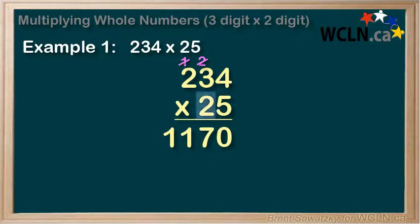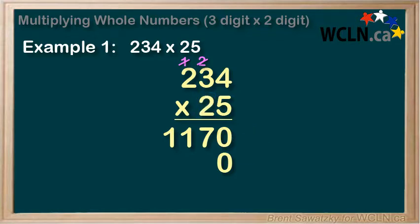Next, we deal with the 2. But we note that this isn't just a 2 — it's in the 10 spot, so really we're talking about a 20. The easiest way to deal with the fact that this is a 20 is to put a 0 down here, and then we just treat it as a 2, as the 0 multiplies an extra 10 for us. So we're ready to do it again, this time with the 2.